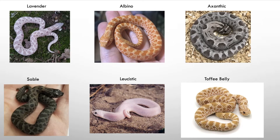Here are visual pictures of a few recessive morphs: lavender, sable, albino, leucistic, axanthic, and toffee belly.